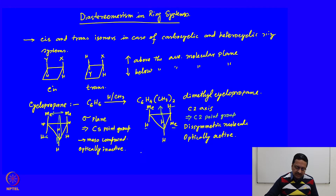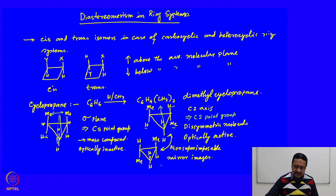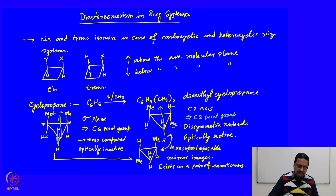If we draw the mirror image of this trans molecule, we see that the mirror image is non-superimposable. These two are non-superimposable mirror images, so the trans molecule exists as a pair of enantiomers.